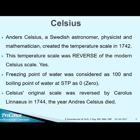Andrew Celsius, a Swedish astronomer, physicist and mathematician, created a temperature scale in 1742. This temperature scale was the reverse of the modern Celsius scale. The freezing point of water was considered as 100 and the boiling point of water at STP as 0. STP is standard temperature and pressure. In between, 100 divisions were made. So the initial scale proposed by Celsius had the freezing point at 100 and the boiling point at 0.